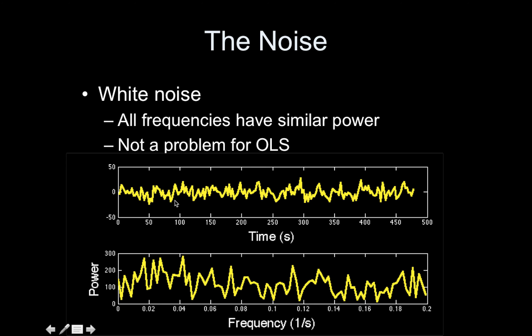Here I'm showing you white noise. A white noise time series just means I randomly sampled data from a normal distribution to create the time series. The bottom is the Fourier transform — I'm not going to go into that in depth, but basically all it is is a representation of your data in frequency space. The x-axis here is frequency in Hertz, which is 1 over seconds, and the y-axis is power. If the power is really high for a frequency, it means that frequency is present in your data. This power spectrum shows that all frequencies are equally present in white noise.